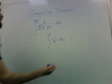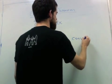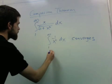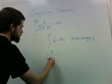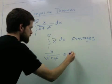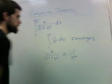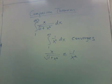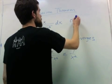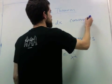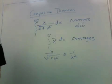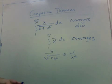So this thing converges, and we know that it's bigger than the thing we're looking at, so this converges too, and that's what the comparison theorem tells us.